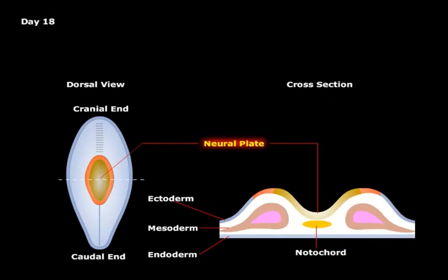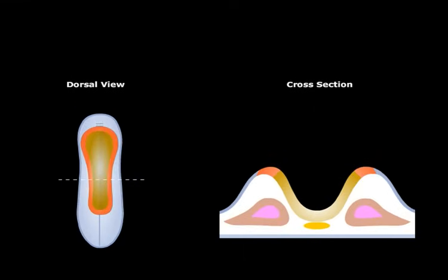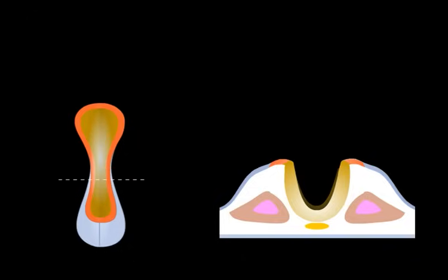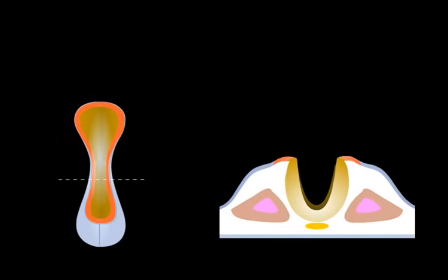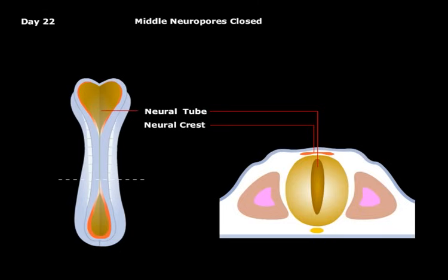The cross section on the right will help visualize the folding of the neural plate, leading to the formation of the neural tube. By the end of the third week, the edges of the neural plate extend upward to become neural folds. The depressed mid-region is now the neural groove. Each neural fold then grows toward each other to fuse at the midline.